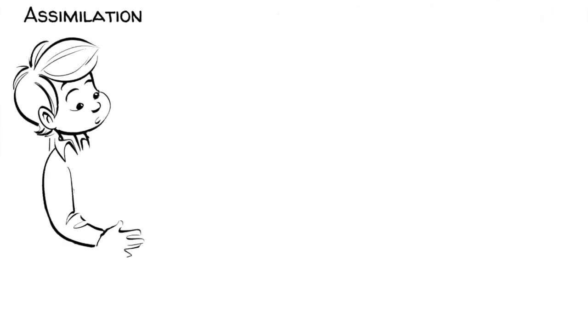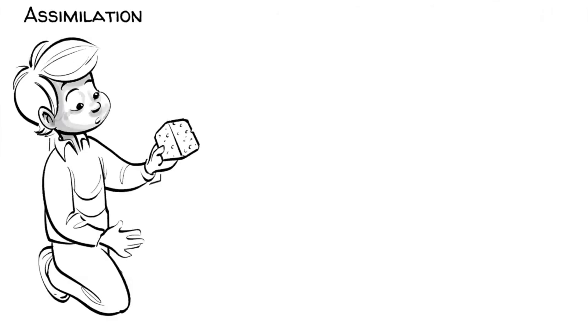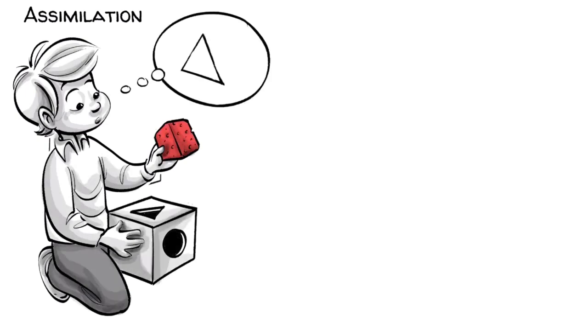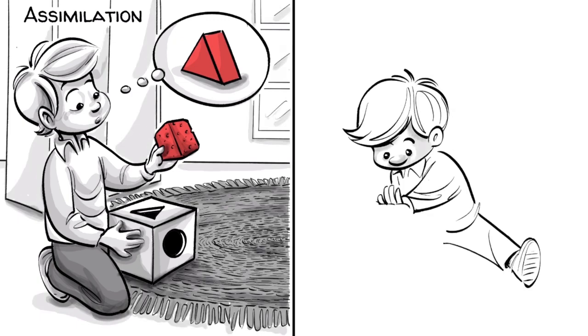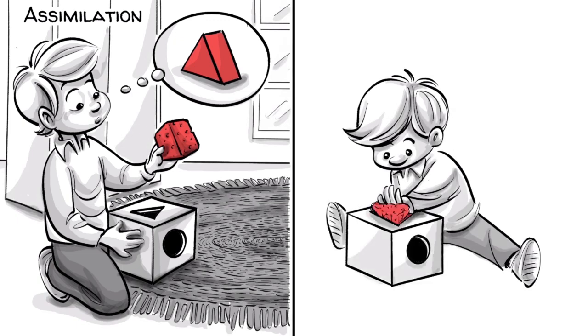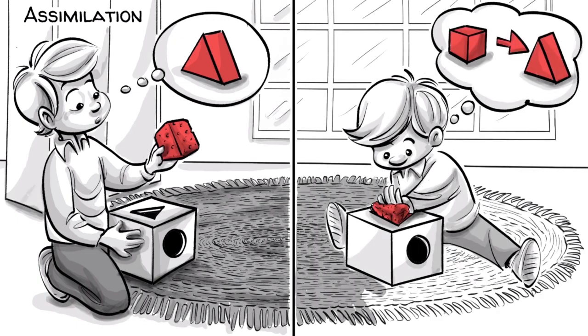Assimilation is the cognitive process of making new information fit in with your existing understanding of the world. It works if new information is close to what we already know. To process the new information, we make it fit into our existing schemas.